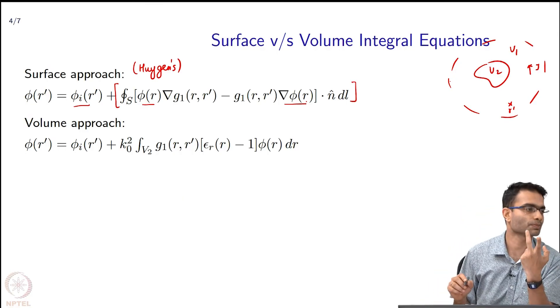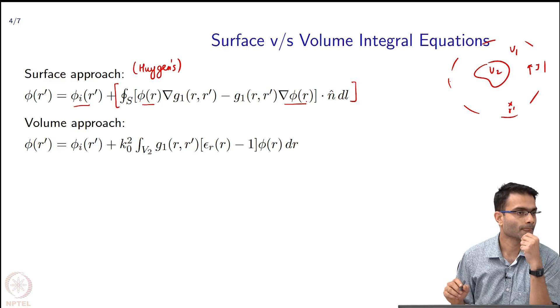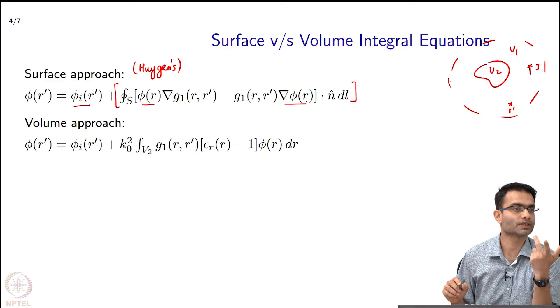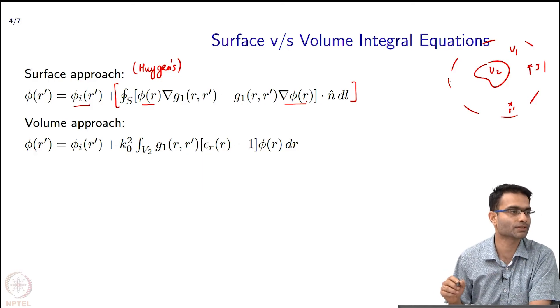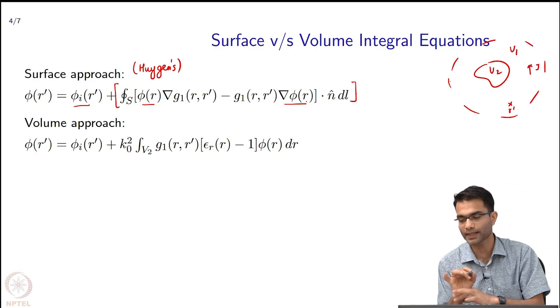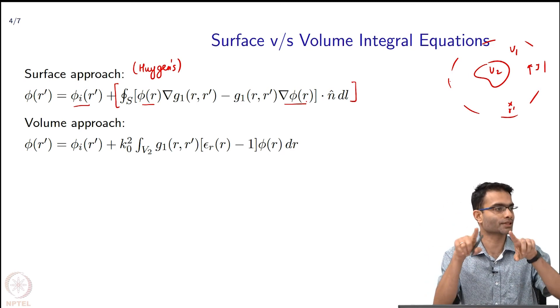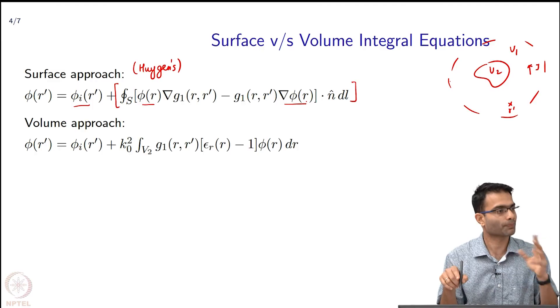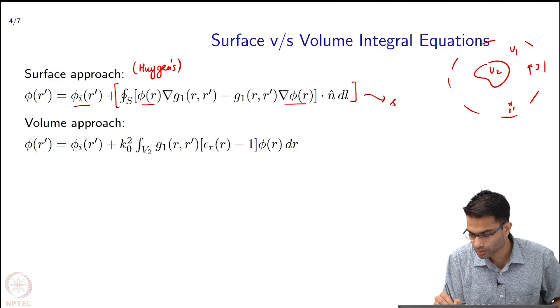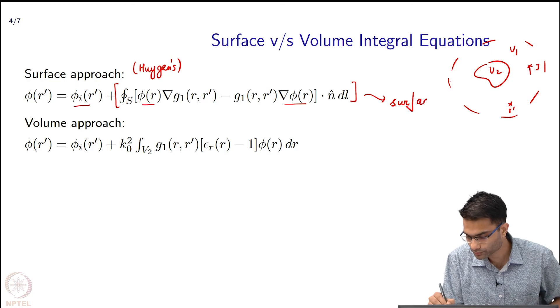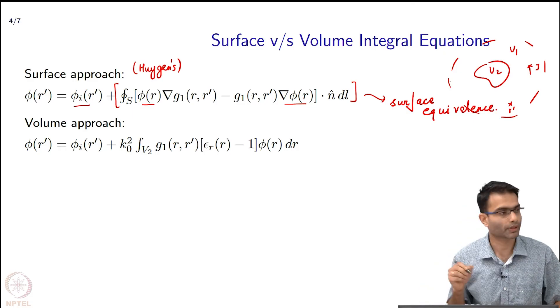We studied two equivalence principles - which equivalence principle is this one? We studied surface equivalence principle and volume equivalence principle. This is clearly surface equivalence principle because I have replaced V2 by set of currents on the surface - tangential fields on the surface. It is a perfect example of a surface equivalence.